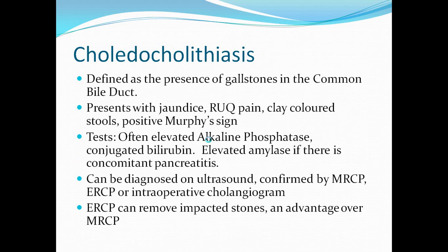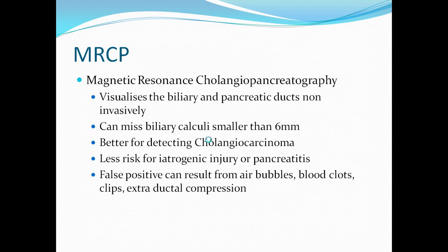Let's go over what these tests are. An MRCP is a magnetic resonance cholangiopancreatography — a non-invasive test which uses MRI to visualize the biliary and pancreatic ducts. This can often miss very small biliary calculi smaller than 6 mm. But it is better for detecting cholangiocarcinoma, and there is less risk of iatrogenic pancreatitis. However, you can have false positives from air bubbles, blood clots, clips, and extraductal compression.